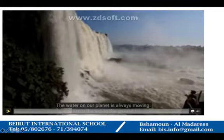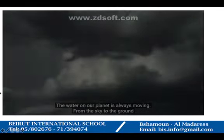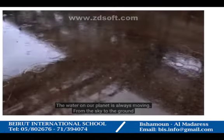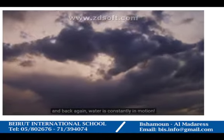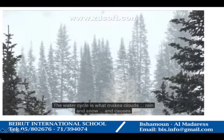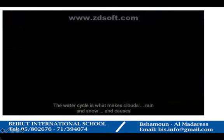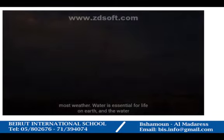The water on our planet is always moving from the sky to the ground and back again. Water is constantly in motion. The water cycle is what makes the clouds, rain and snow, and causes most weather.